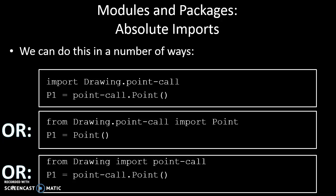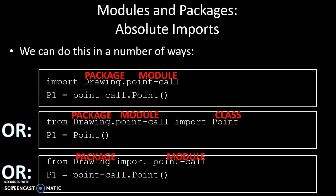If I want to just bring in the Point method, I can say from Drawing.point-call import just the class Point and declare an instance of that. Or I can bring in the whole thing again by just saying from Drawing import point-call. It's the same as the top one, just phrased differently. In the top one, we're importing the whole module. In the middle one, we're importing just the class in that module, and in the bottom one, we're importing the whole module again.